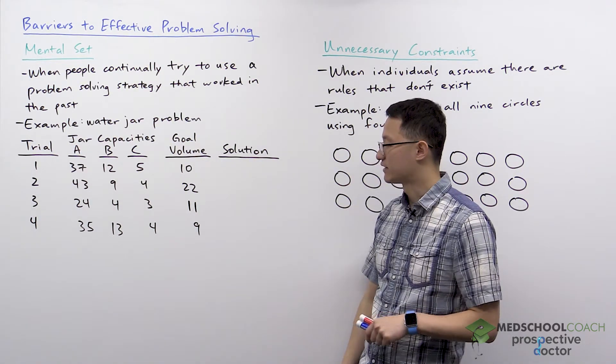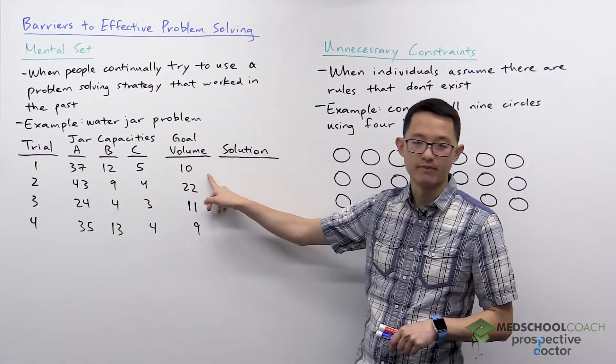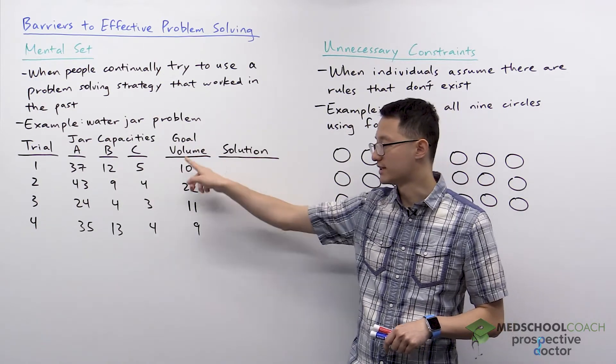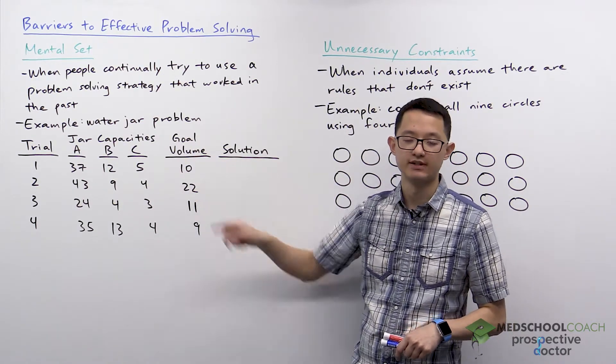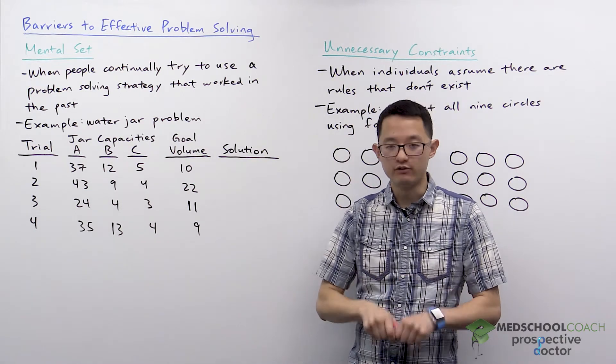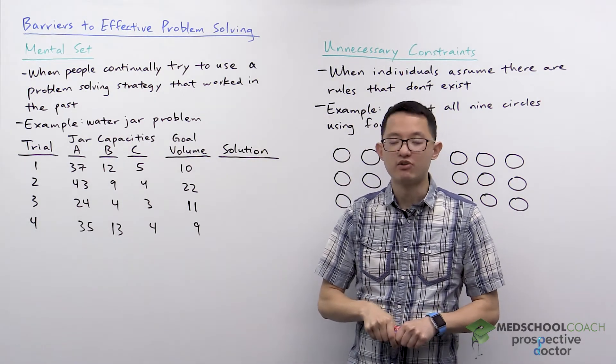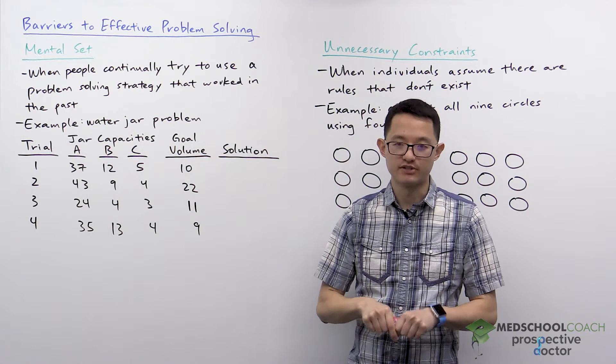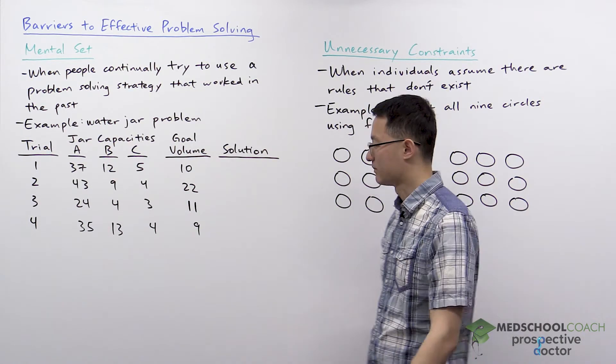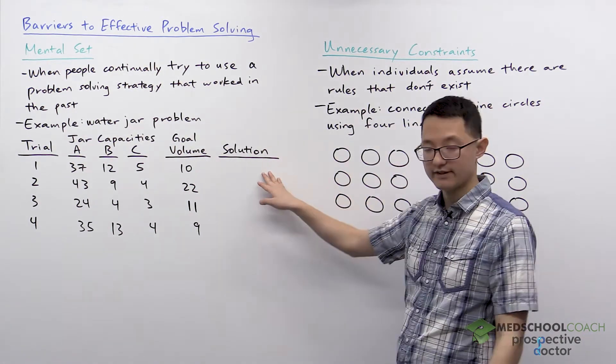Your task is to figure out how you can exactly measure a goal volume, which in this case is 10 liters. What you're allowed to do is you can fill the jars and empty the jars with water as many times as you want.